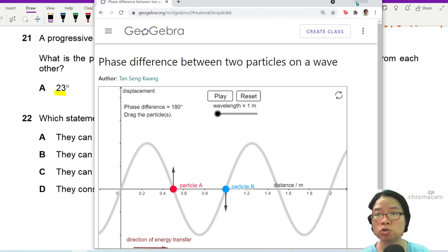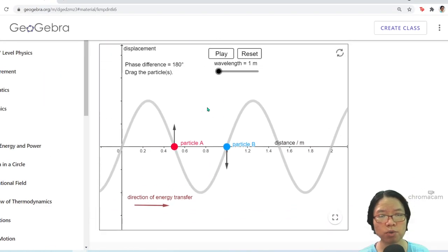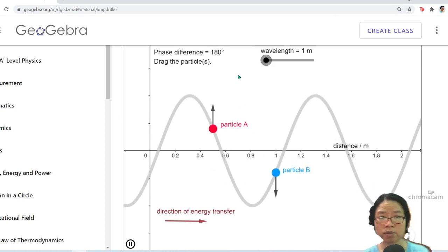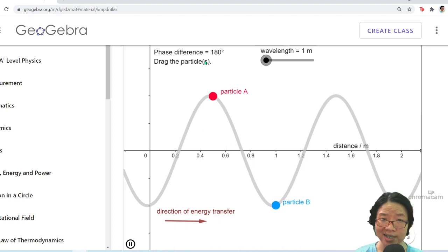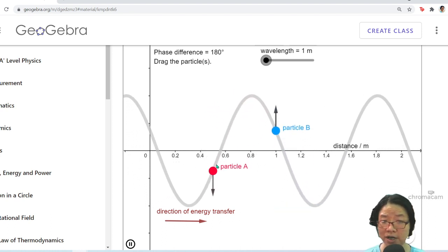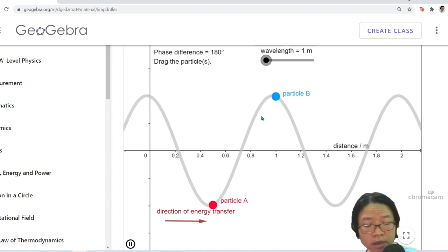The reason why we look at phase difference is because we want to know how the relative motion is like. So if the phase difference is 180, we know that these two particles will move opposite direction to each other all the time.